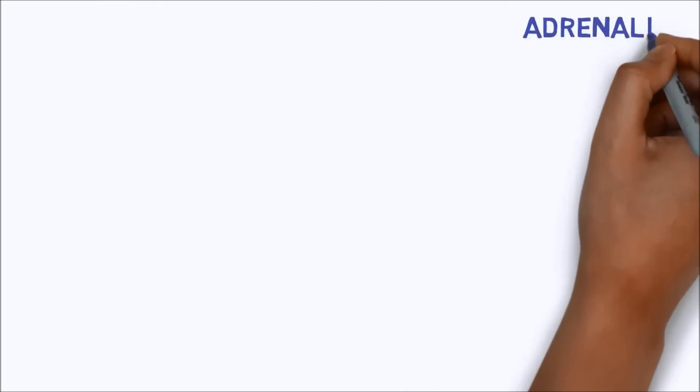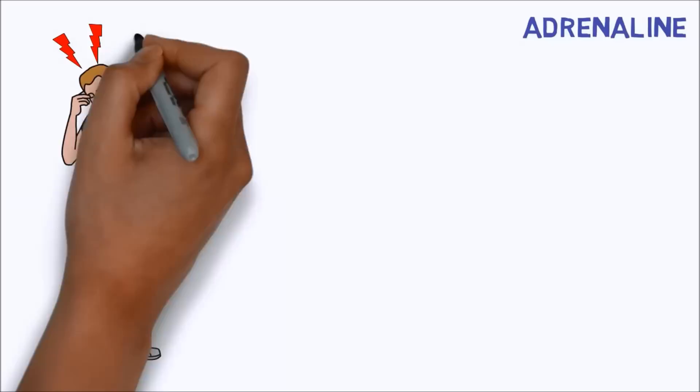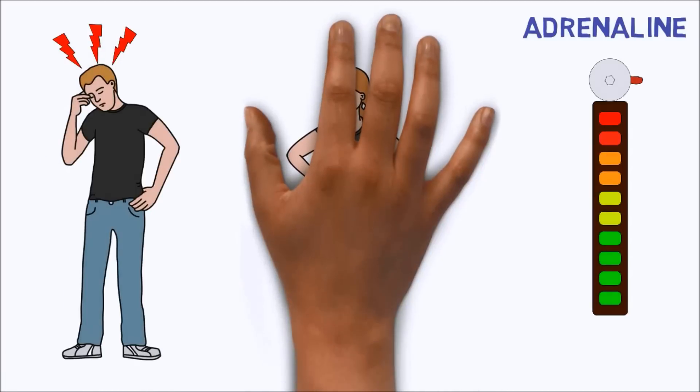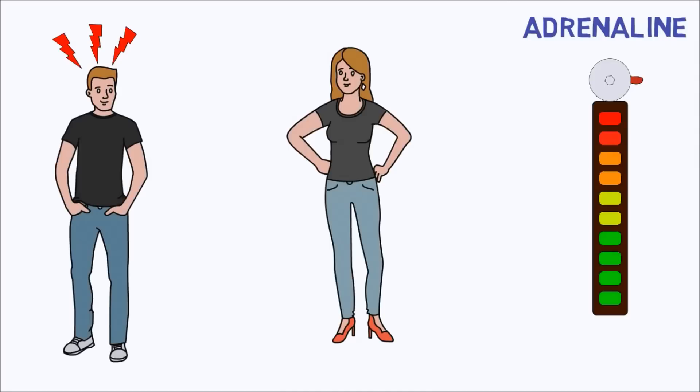First one is adrenaline. The initial stages of falling for someone activates your stress response, increasing your blood levels of adrenaline and cortisol. This has the charming effect that when you unexpectedly bump into your new love, you start to sweat, your heart races, and your mouth goes dry.